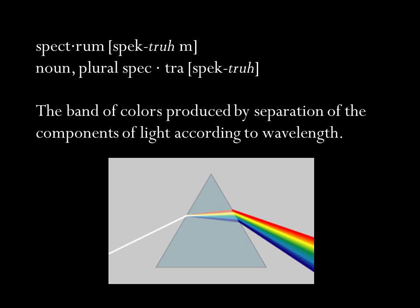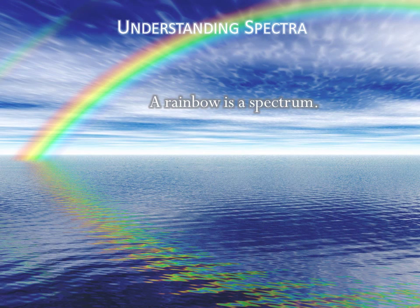A spectrum is the band of colors produced by separating the components of light according to wavelength. A rainbow is a familiar spectrum. Raindrops act as tiny prisms, and we disperse the white light of the sun into its component wavelengths or colors.